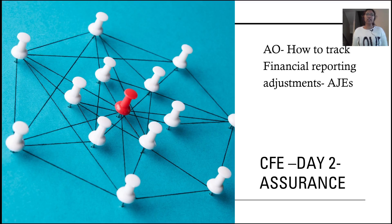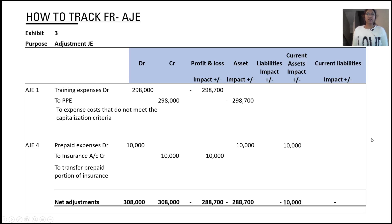These adjustments are very important to track in an effective manner so that you can use them in other AOs, since some have effects on calculations of other AOs. This is the format I used to follow while writing the CFE to track my financial reporting adjustment journal entries. What this format does is keep everything organized together — it's quick to refer back to and easy for the marker to understand.